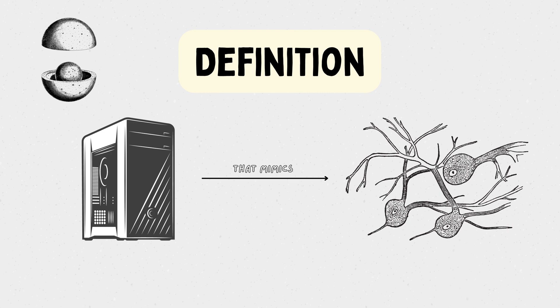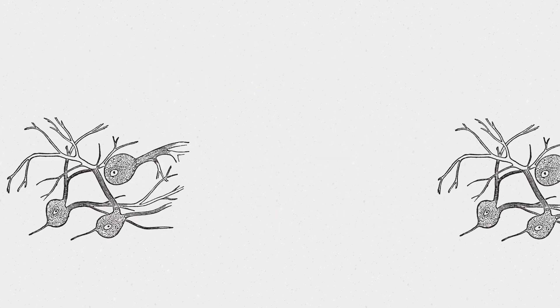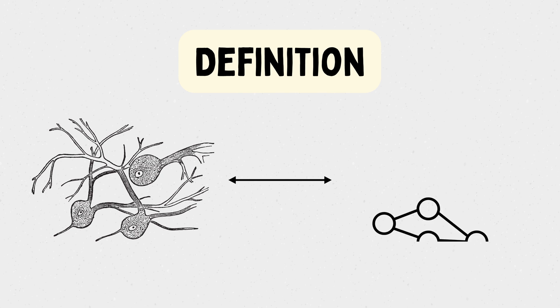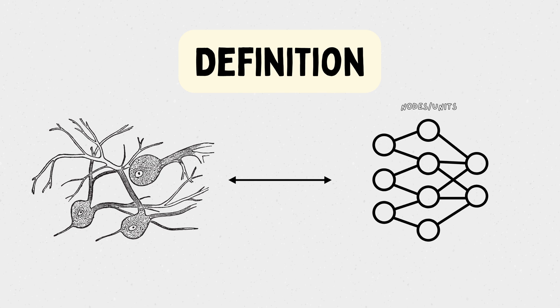Just like our brains consist of interconnected neurons, a neural network consists of interconnected artificial neurons, also known as nodes or units. These artificial neurons work together to solve complex problems and make predictions based on data.